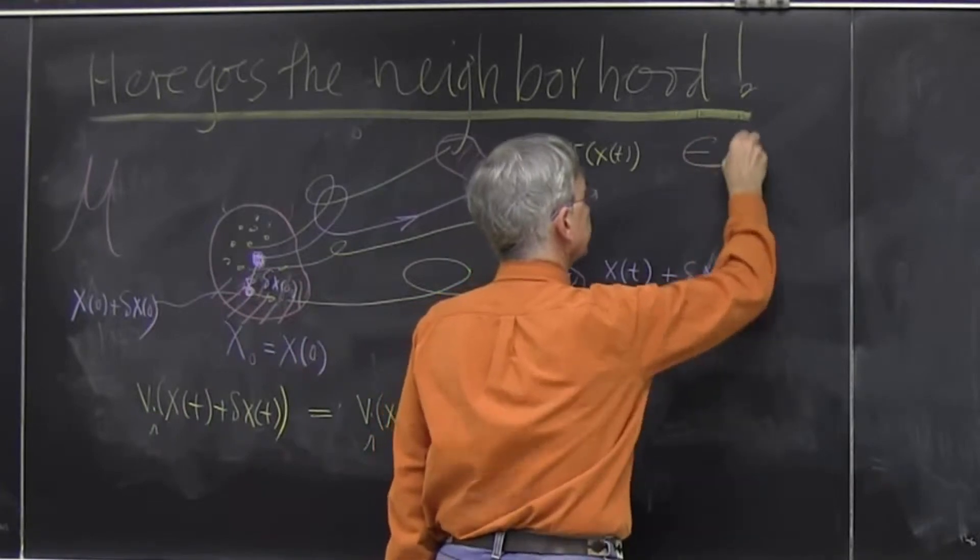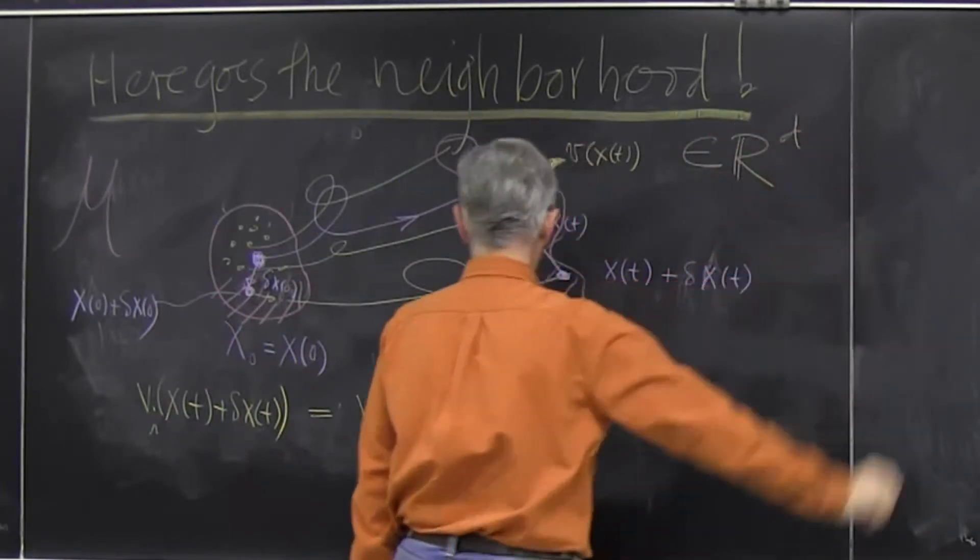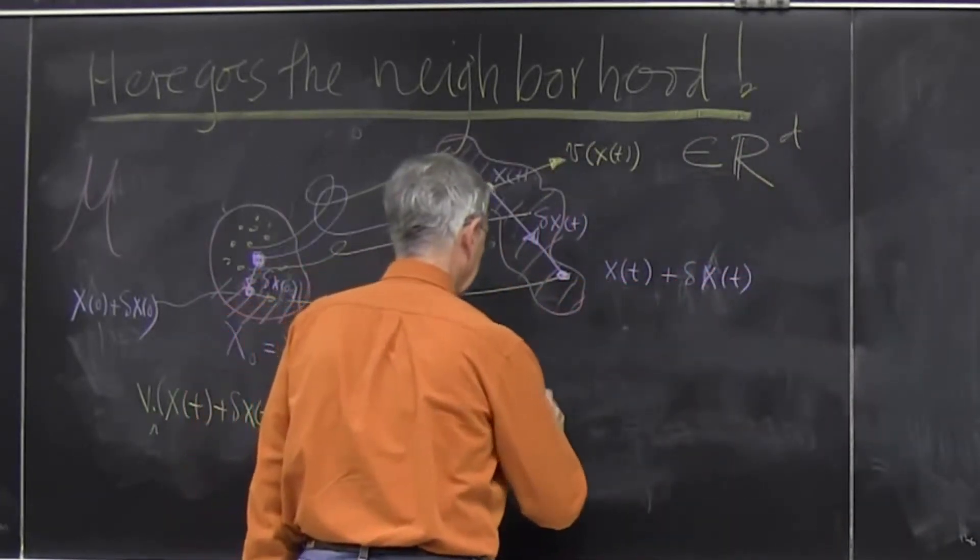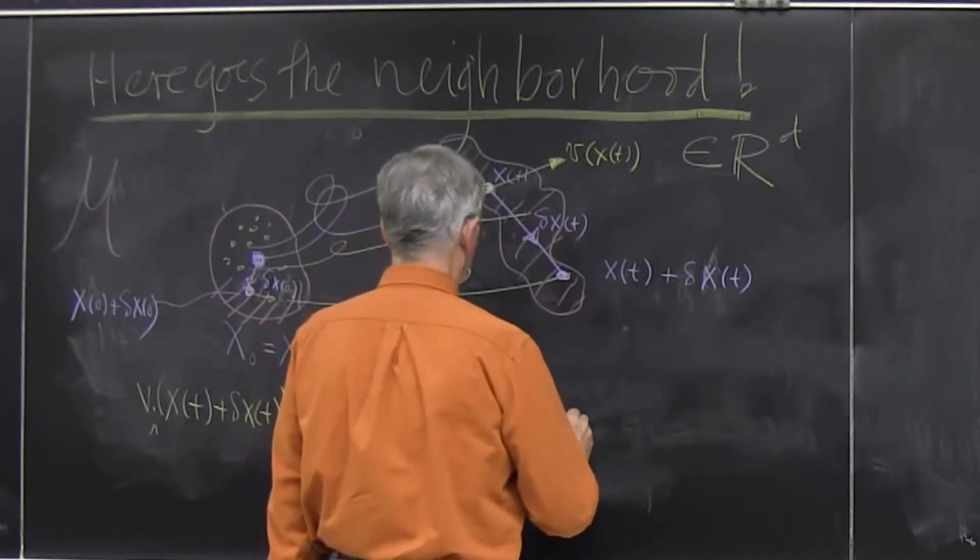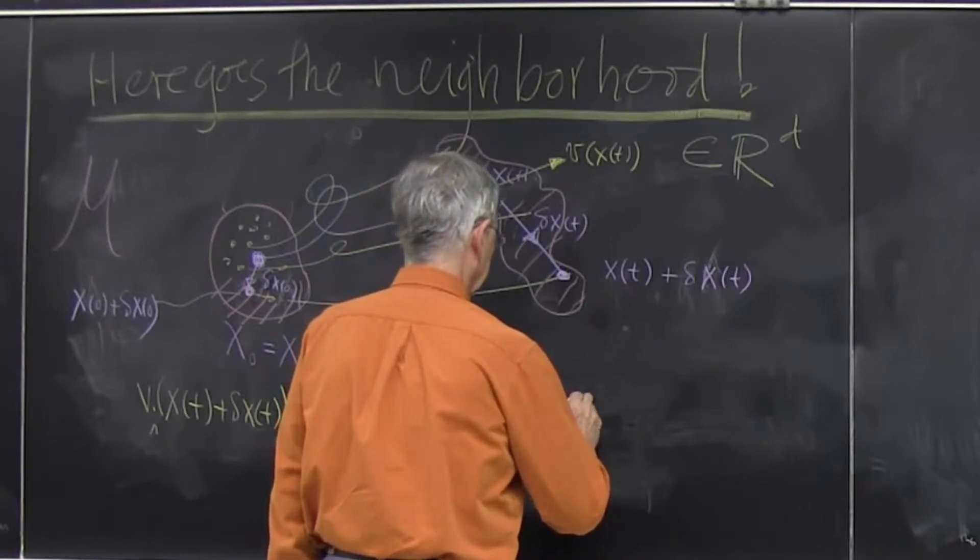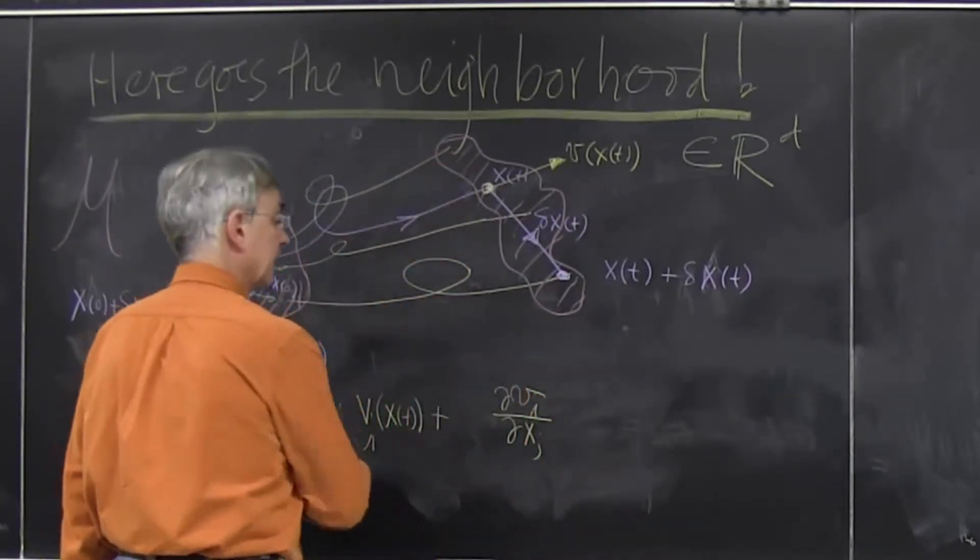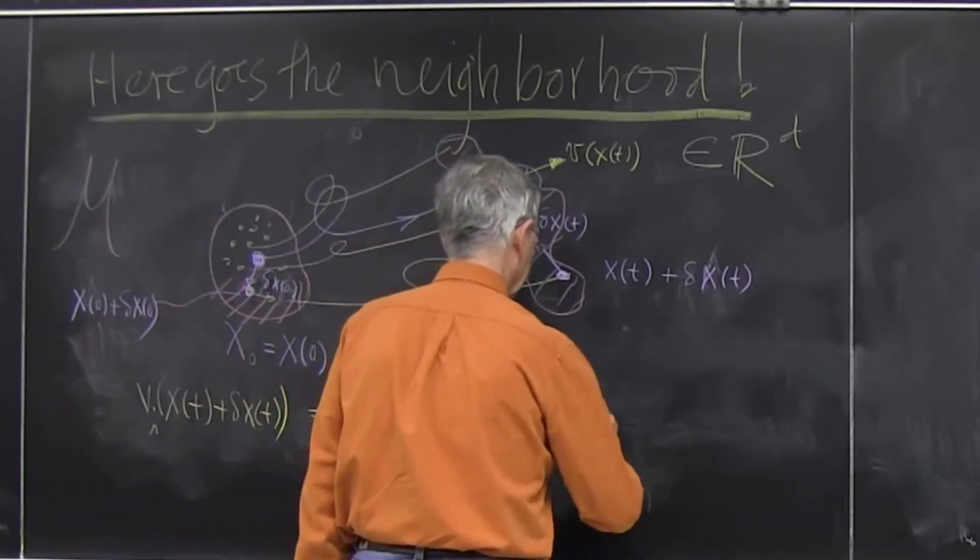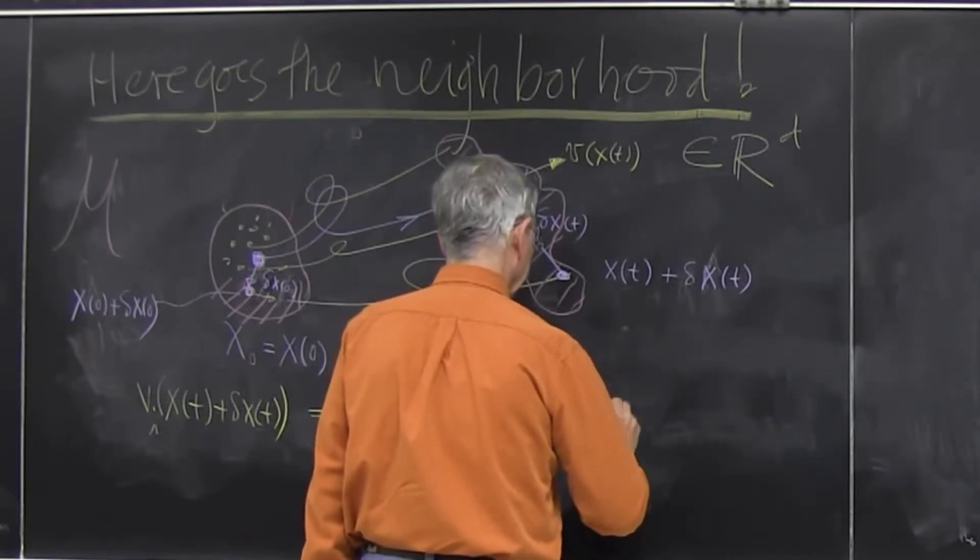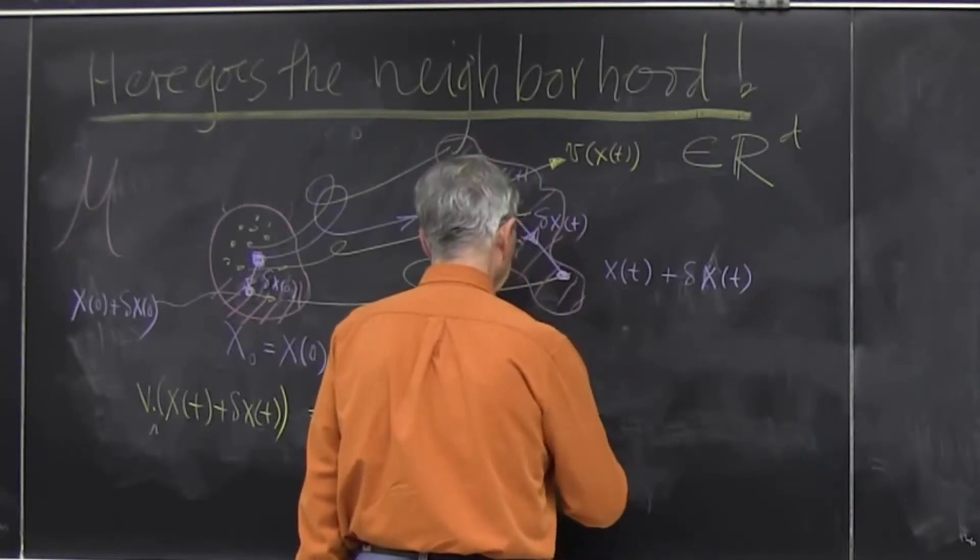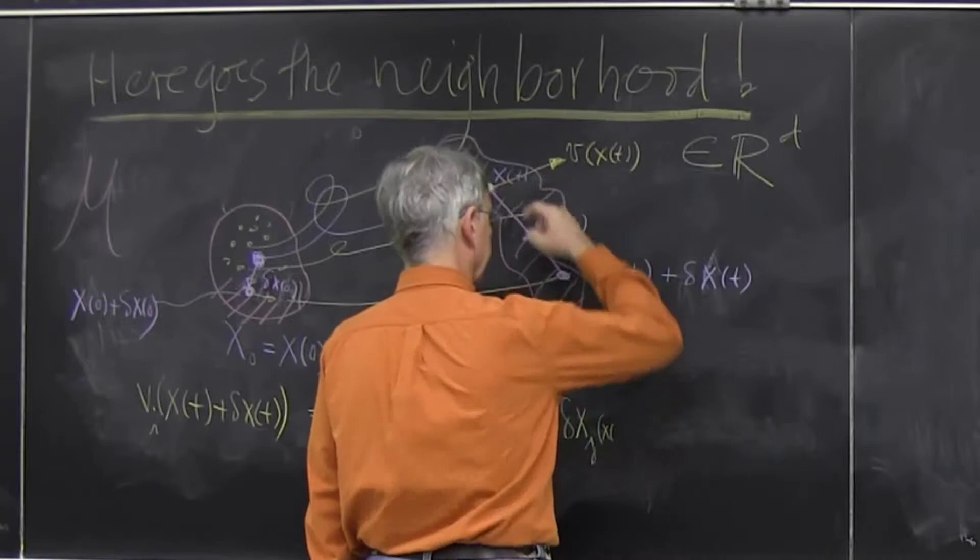And this is d numbers, real numbers specifying it. And then times delta xj, both of them evaluated at that instant in time, wherever you are, right here.